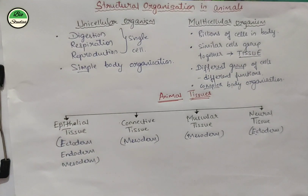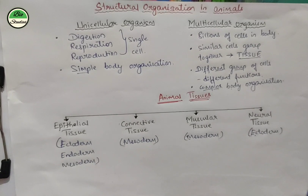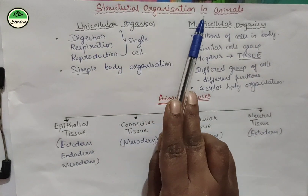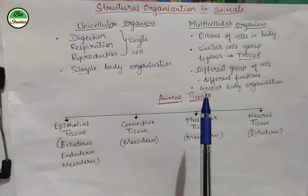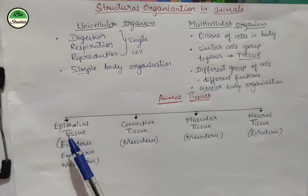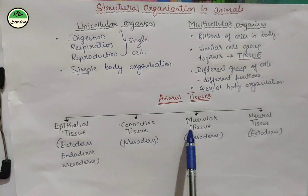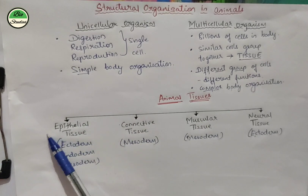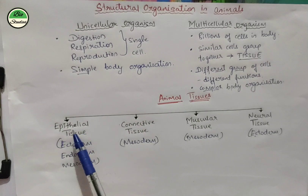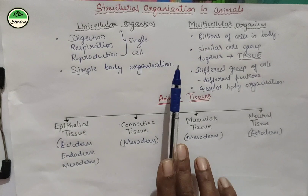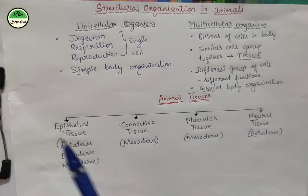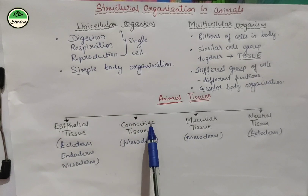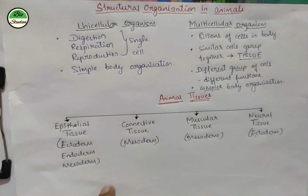Namaste and welcome to Bio Studies. We have started the chapter Structural Organization in Animals. In the animal body, there are four types of tissues: epithelial tissue, connective tissue, muscular tissue, and neural tissue. We have already studied epithelial tissue — squamous, cuboidal, columnar, ciliated, and stratified — in the previous videos, and we have started with the connective tissue.